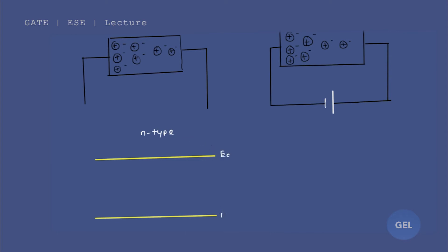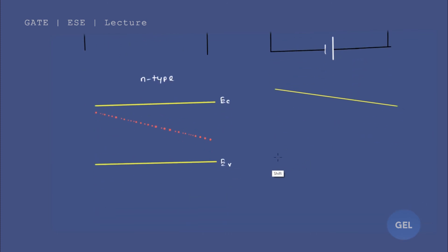In the non-uniformly doped n-type case, you have Ec and Ev. The Fermi energy level is represented differently — it is tilted — because the semiconductor is non-uniformly doped. This tilted Fermi energy level indicates that the n-type semiconductor is non-uniformly doped, even in the unbiased case. If you apply biasing, the energy levels will be further tilted towards the positive side.